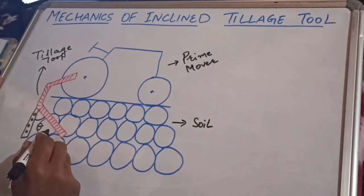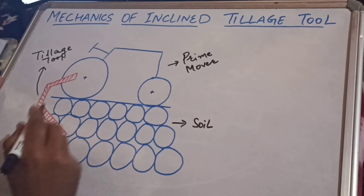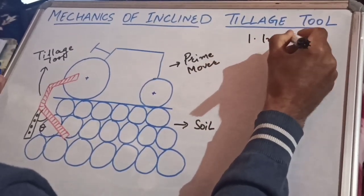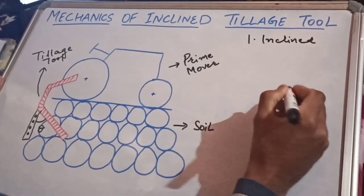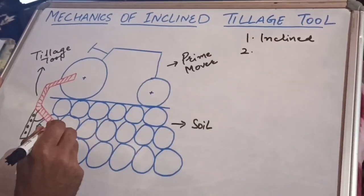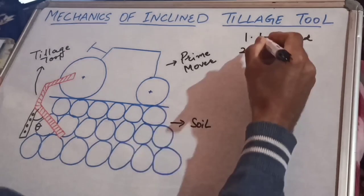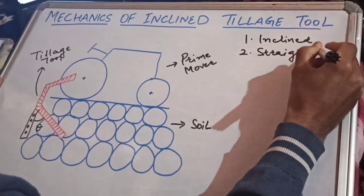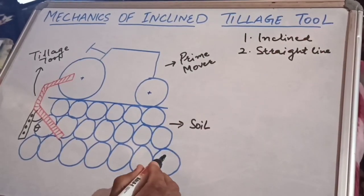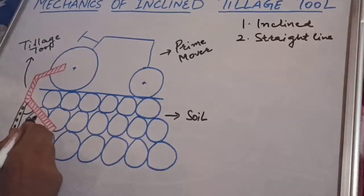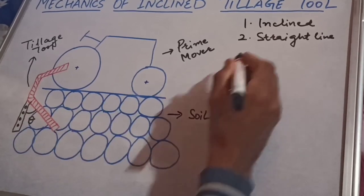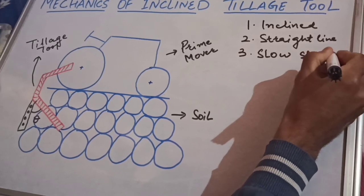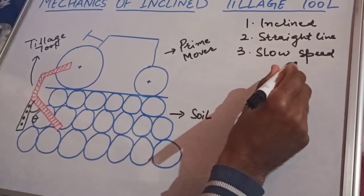This inclined tillage tool has three parameters involved. First, the tillage tool is inclined at some angle with the direction of travel. Second, it usually operates in a straight line or horizontal direction. And third, this tillage tool operates at a very slow speed — most tillage operations are carried out at a very slow speed.